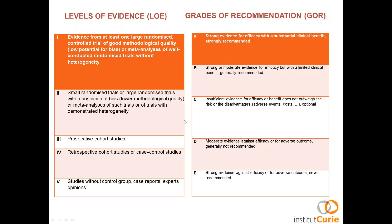Before we start the lecture, I would like to discuss the different levels of evidence and grades of recommendation. There are five levels of evidence. Level one is when we have at least one large randomized controlled trial of good methodology or meta-analysis of well-conducted randomized trials. Level two is small randomized trials or large randomized trials with a suspicion of bias. Level three is prospective cohort studies. Level four is retrospective cohort or case-control studies. Level five is studies without control group, case reports, and expert opinion.